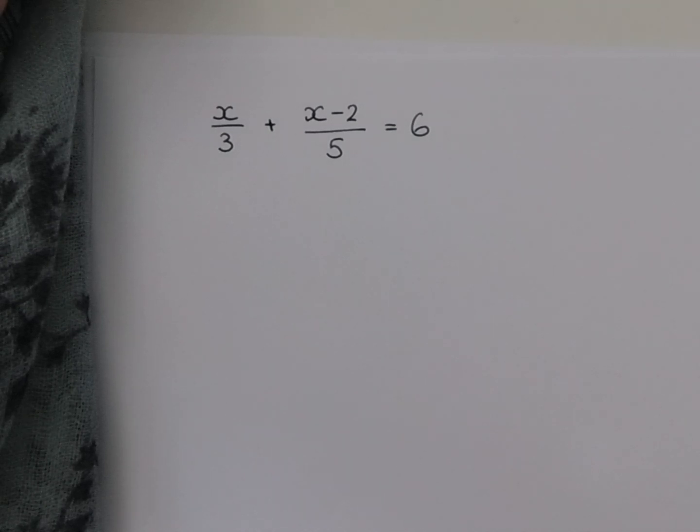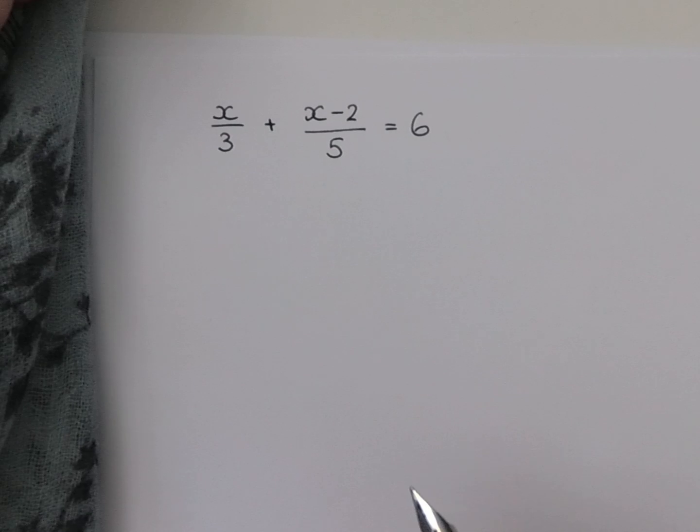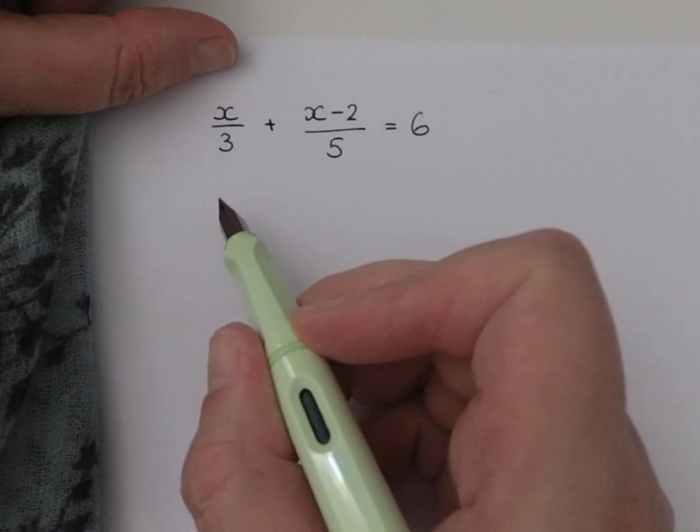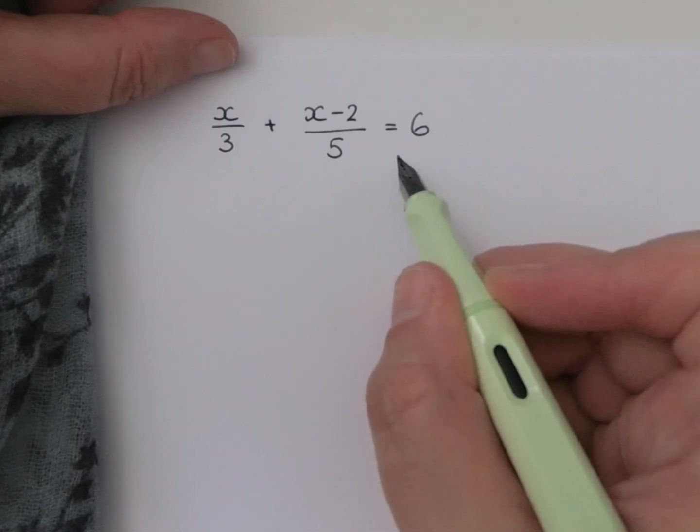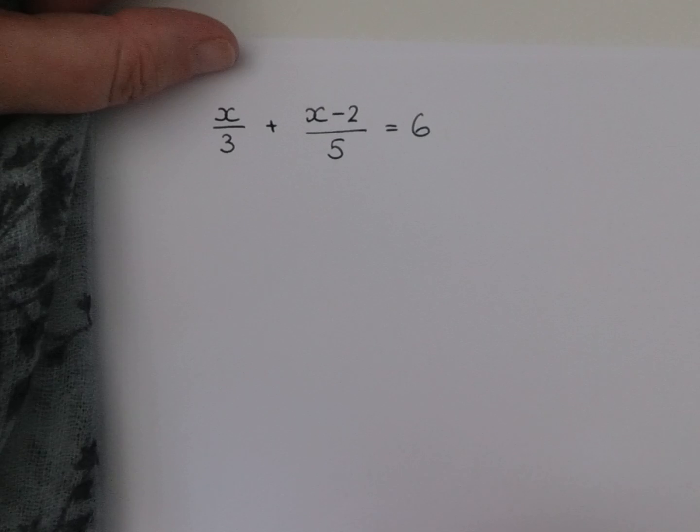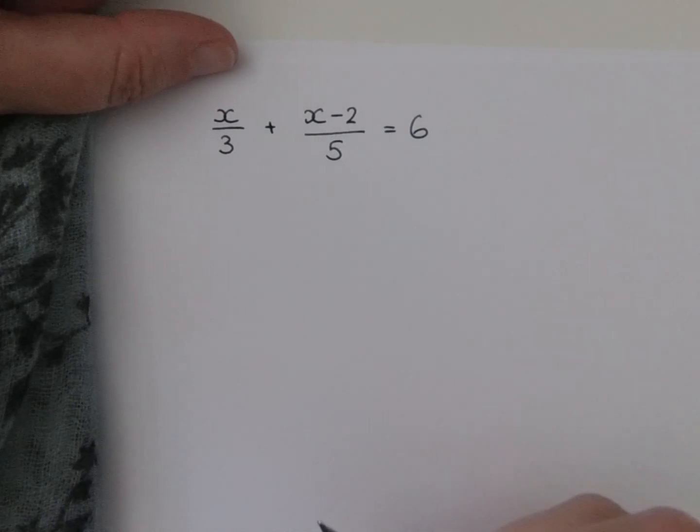So solving algebraic fractions, as the name would imply, you need to solve it, you need to find some answers. You need to undo these equations and find a value or values for x or whatever your variable is for the question. The first example we've got has got two fractions equal to an integer. In order to solve this equation, the first thing we need to do is to clear the fractions.